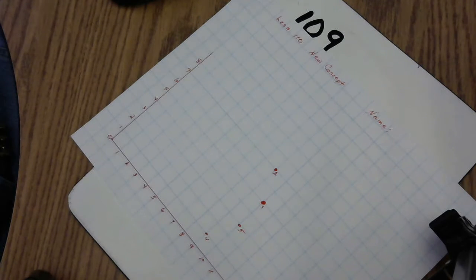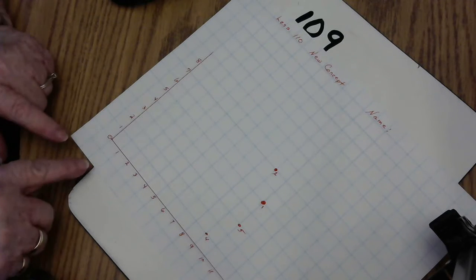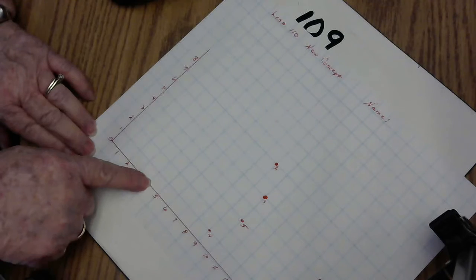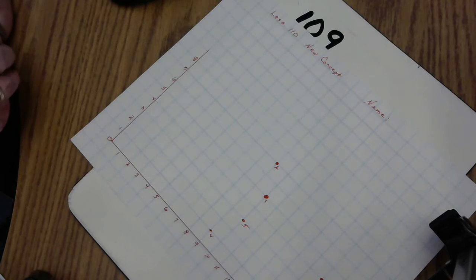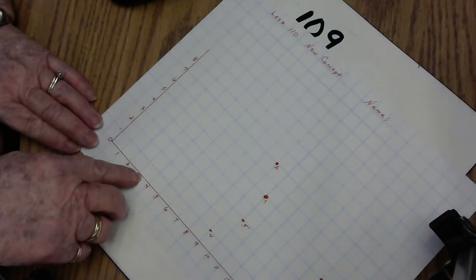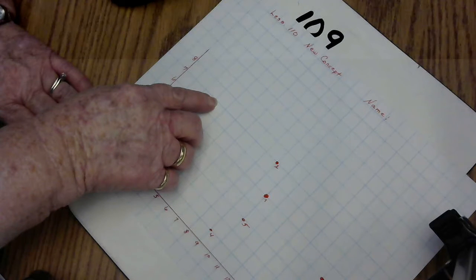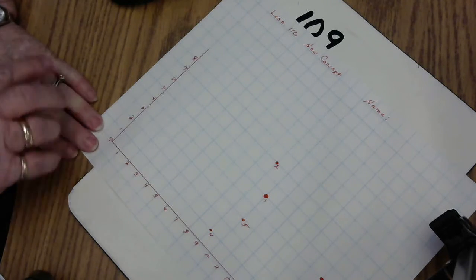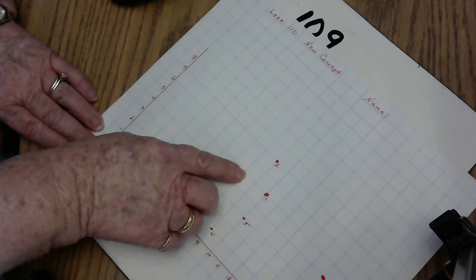The first number tells us how many spaces we move to the right. The second number tells us how many spaces we move up. For example, to get to point (4,3), we go to the right four places, and then we go three places up, and then we would put a dot there. To get to coordinate (3,7), we go over three places and then up seven places. And to get to coordinate (8,5), we go to the right 8 places, and then count up and get to 5 and put a dot right there.